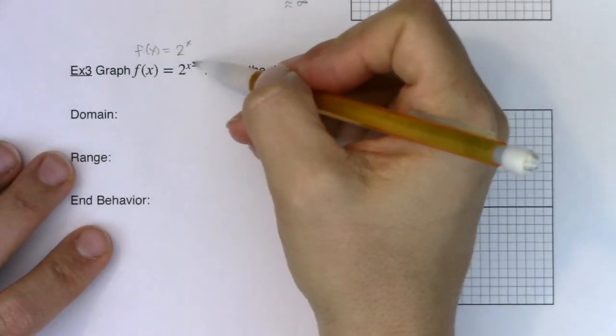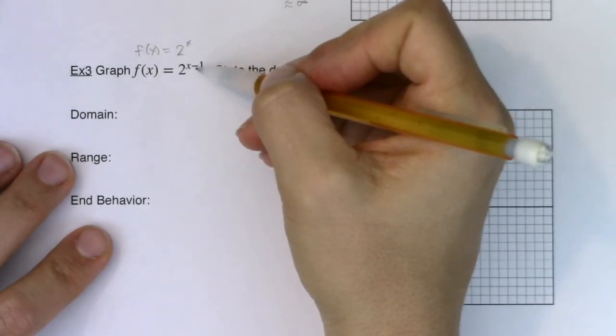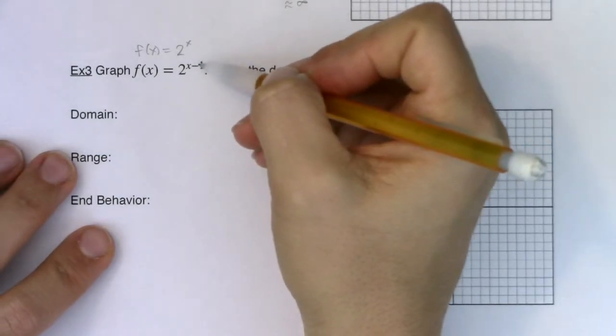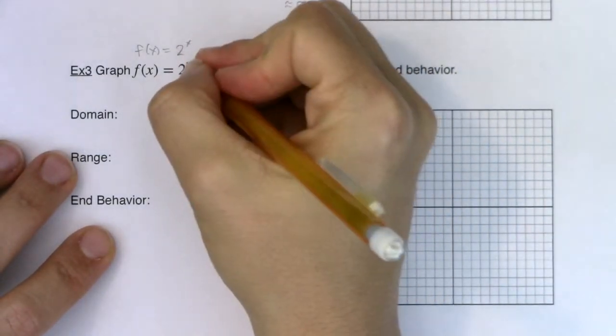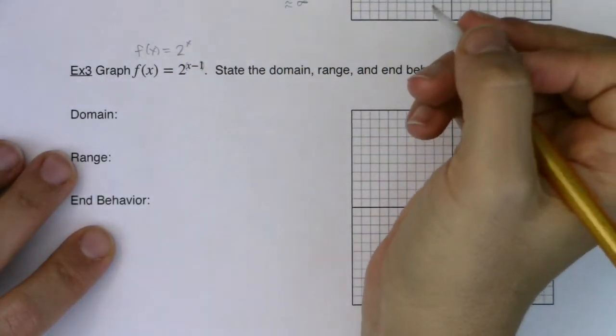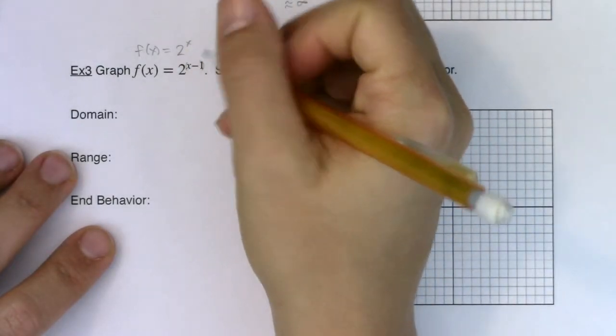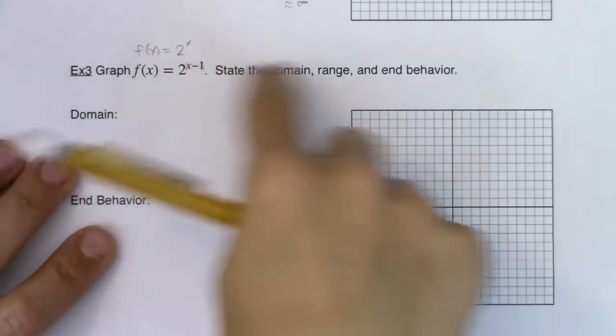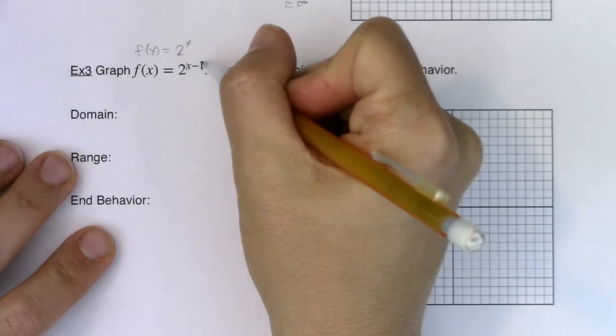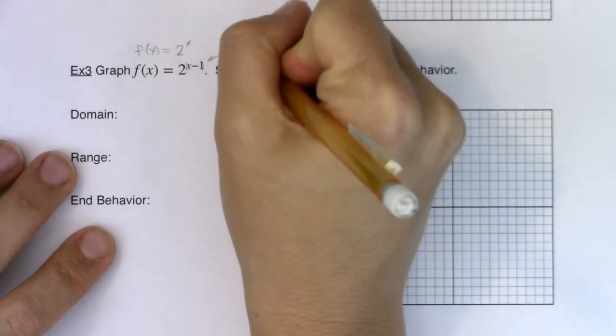So what does this x minus 1 do? Is this going to shift us down one unit or shift us right one unit? Now we have to think about this: x minus 1 is a binomial with its own parentheses around it, and whenever you're subtracting inside the grouping symbols it's going to go left-right. If you remember, this is counterintuitive. So even though you see the minus 1 here, it's actually going to shift you right one unit.